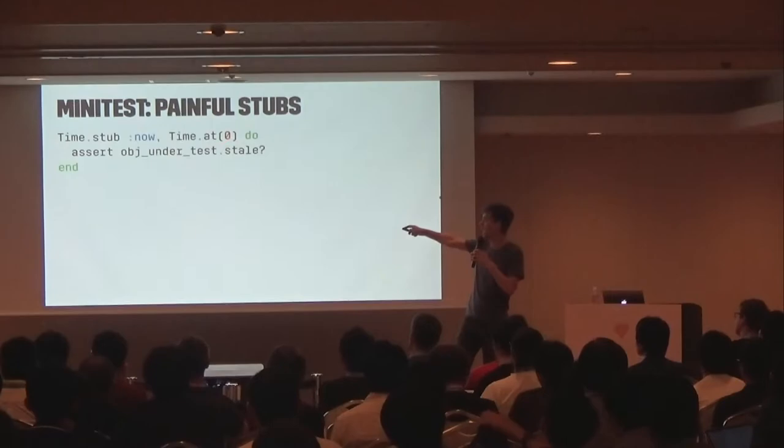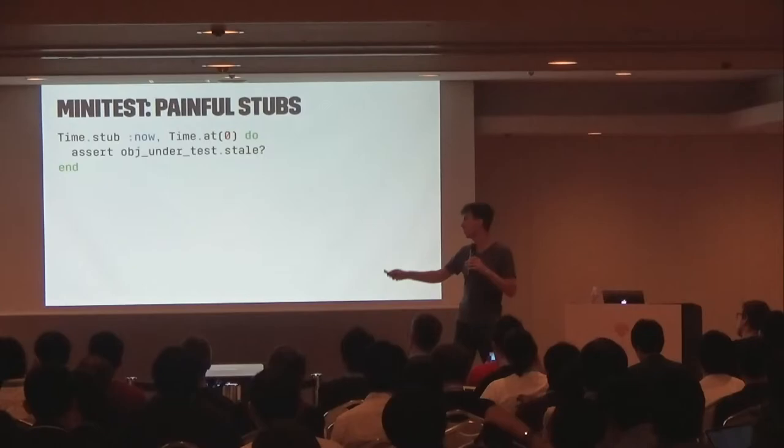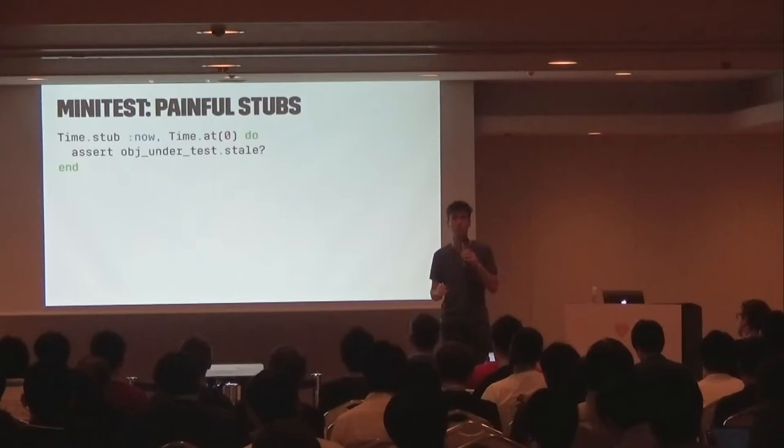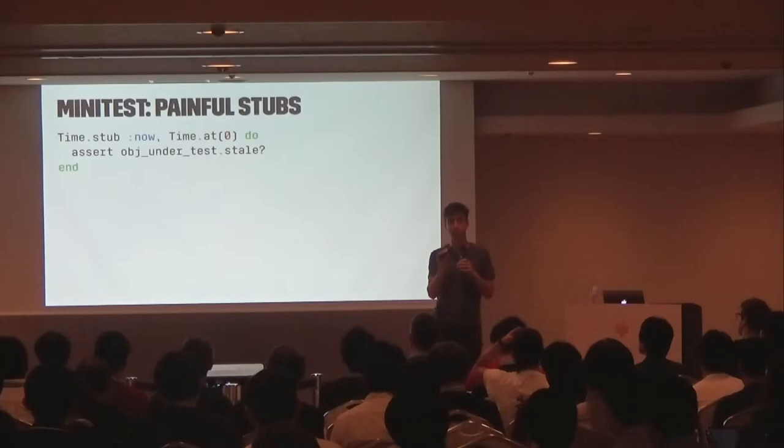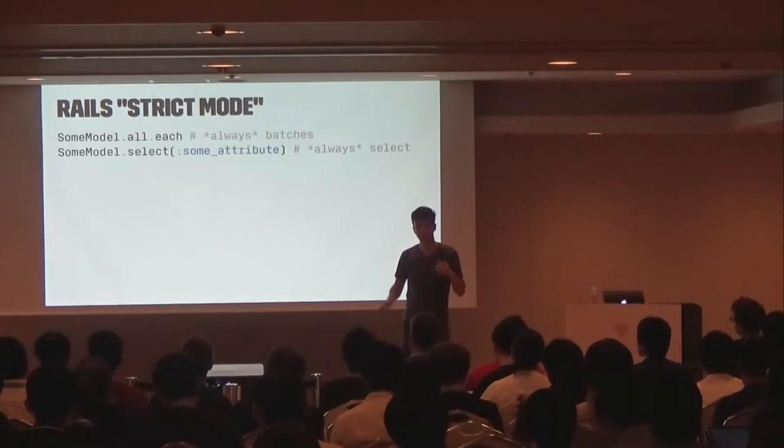Minitest is an example — this is what a Minitest stub looks like. It's a block format, and it's actually really nice to use for just stubbing time. But if you start nesting these and having four stubs in a test, it gets really painful to use. That's deliberate, because Minitest and Ryan, the author of the library, does not want you to use that many stubs. That's part of his testing philosophy, so Minitest deliberately makes stubbing and mocking difficult.